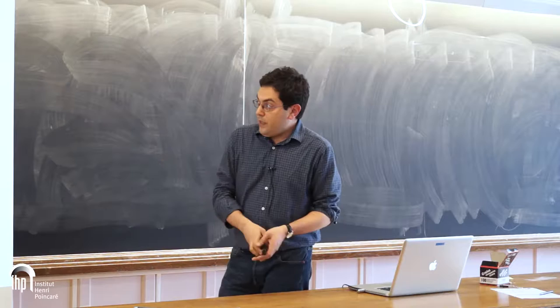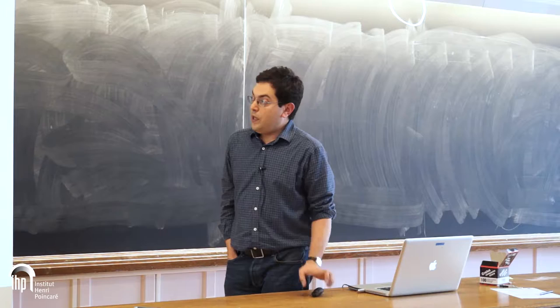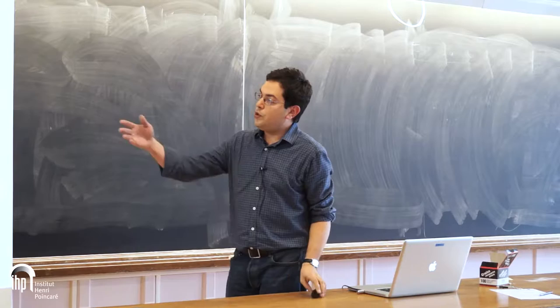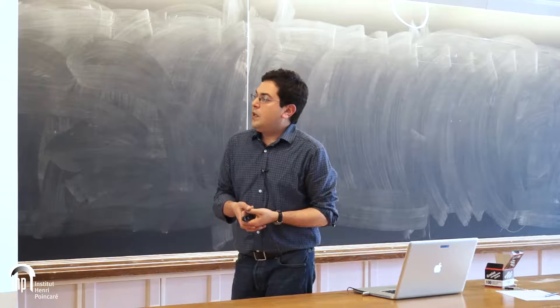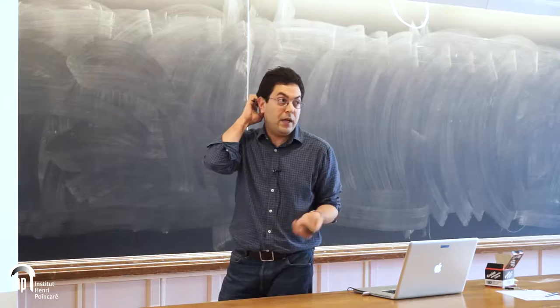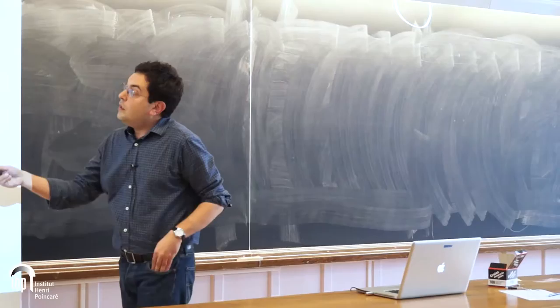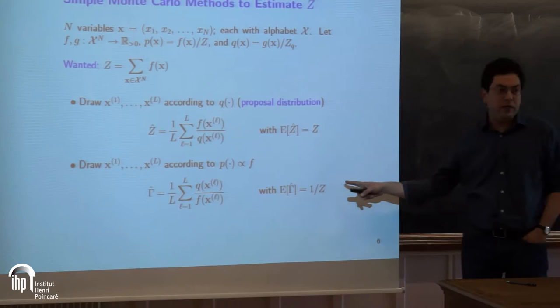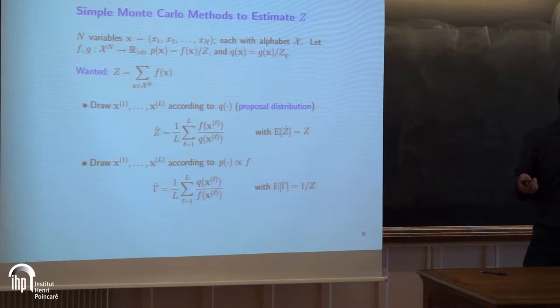Here are two very basic sampling techniques. The first is importance sampling: take l samples according to q — the auxiliary or proposal distribution — and estimate Z by summing f over q at each sampled point; this is an unbiased estimator for Z. The other way is to take l samples according to p, known up to scale as f, and sum the inverse of f multiplied by q at each point; this is an unbiased estimator for 1/Z. Both are bad estimators, but sufficient for the comparisons we want to do.